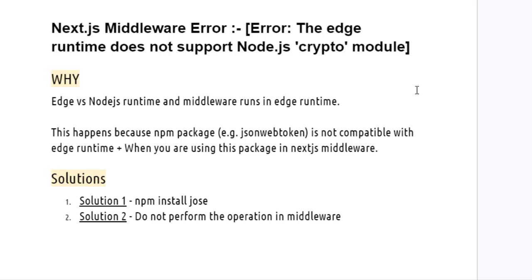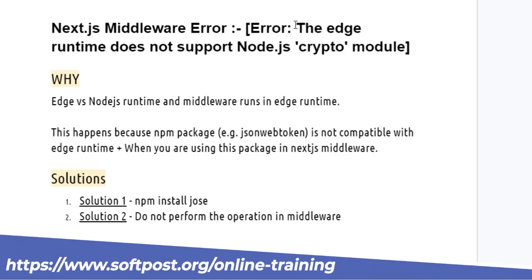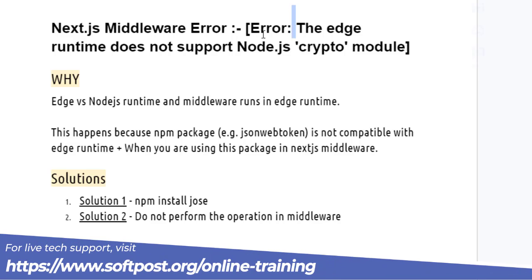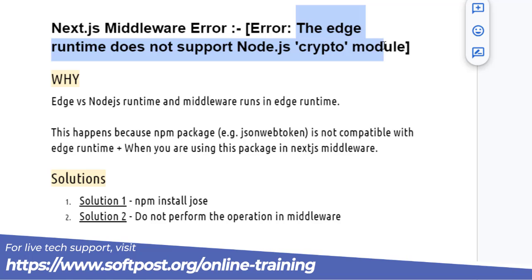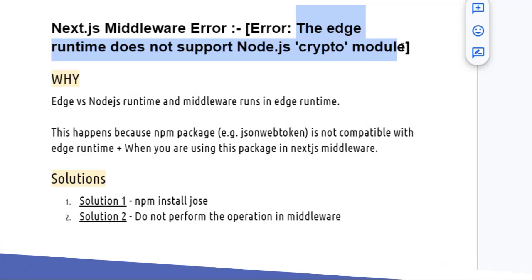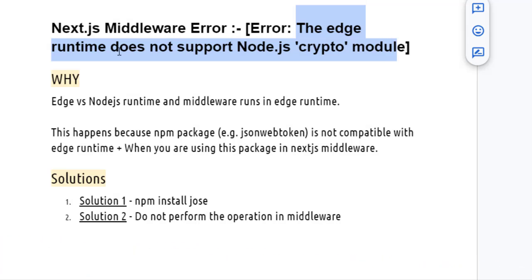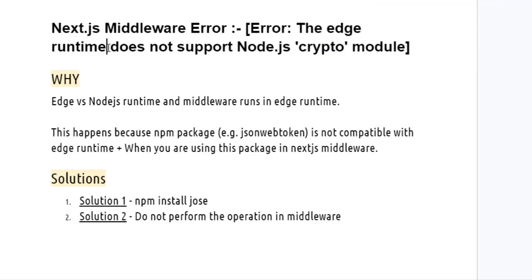You are getting this error: an xjs middleware error — the Edge runtime does not support the Node.js crypto module. Let's try to understand why this error occurs. The error is saying that the Edge runtime does not support this Node.js crypto module.